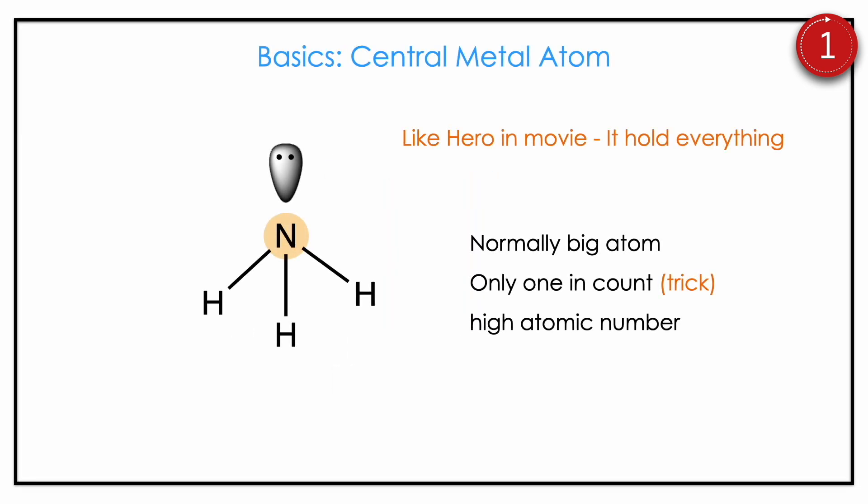Then you should know the central metal atom. The central metal atom is like the hero in a movie — it holds everything, meaning it holds both lone pairs and other atoms. Normally the bigger atom with the higher atomic number is the central metal atom, and there is only one in count. You should be intelligent enough to identify the central metal atom — then only you can apply our concepts.